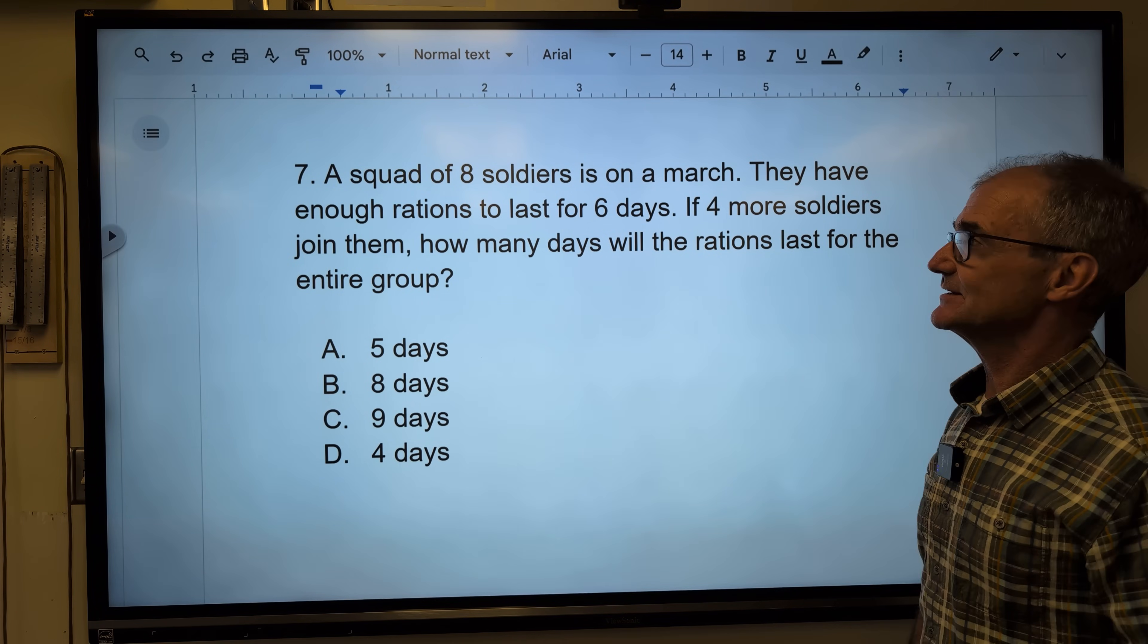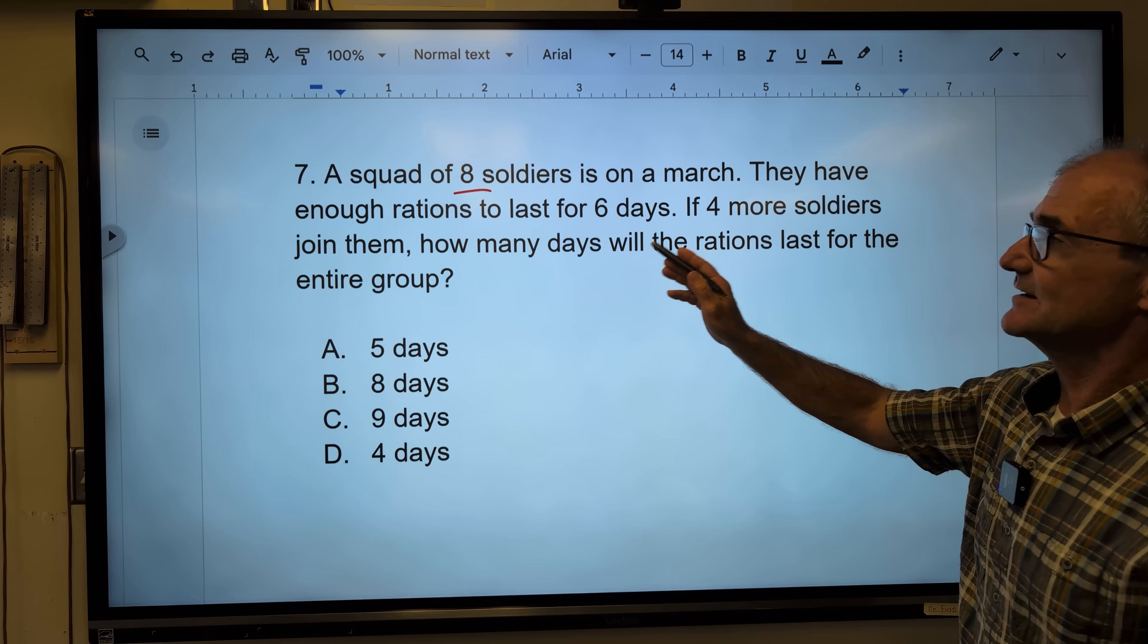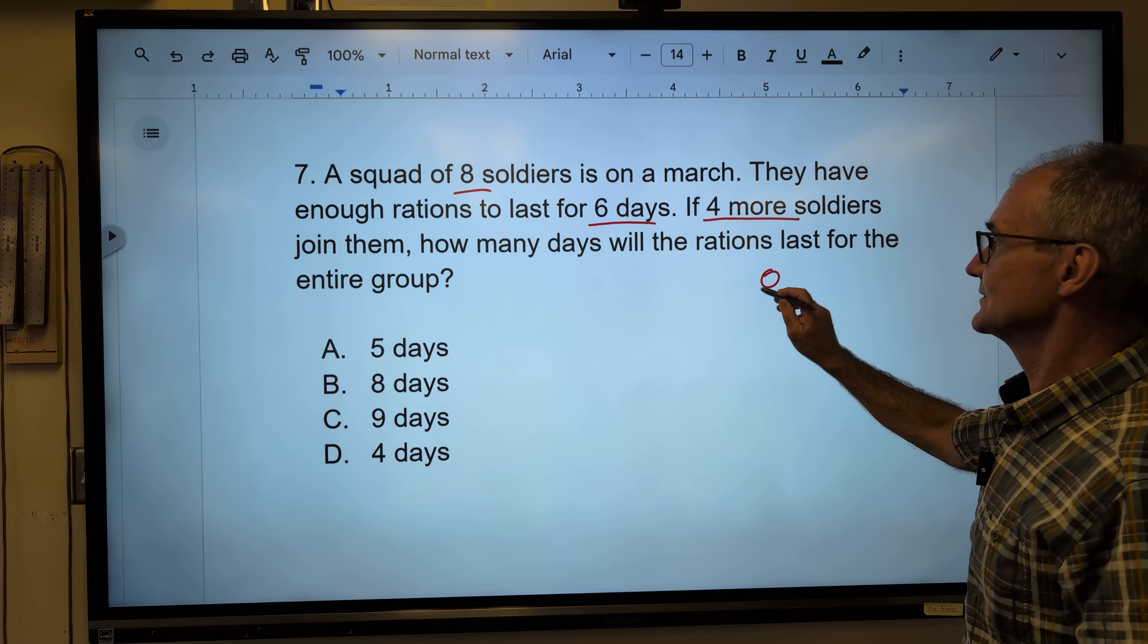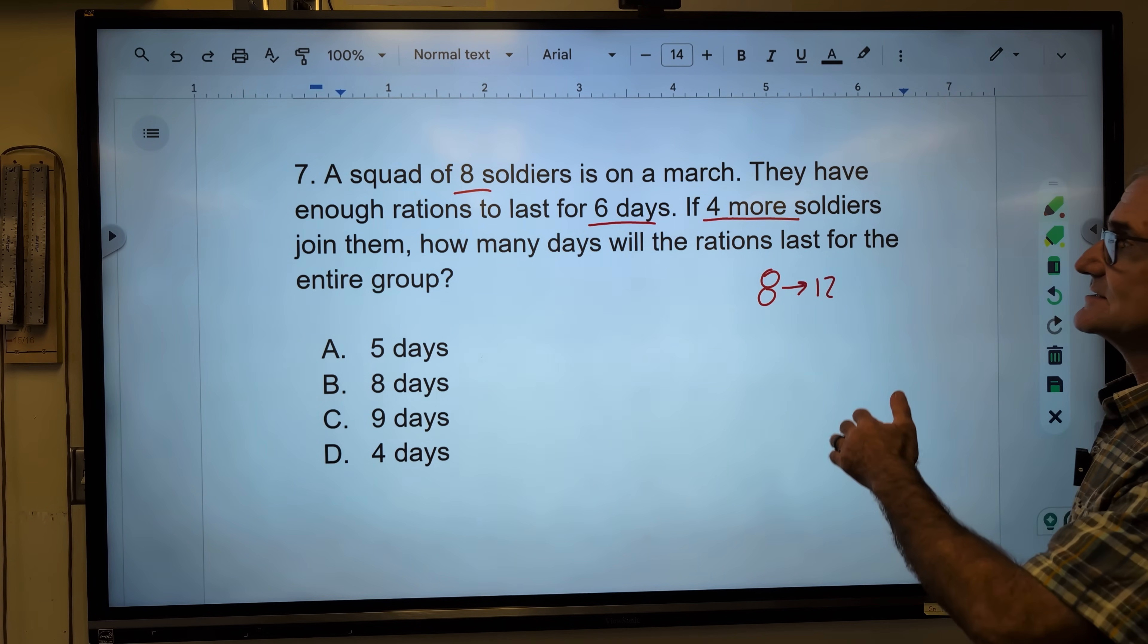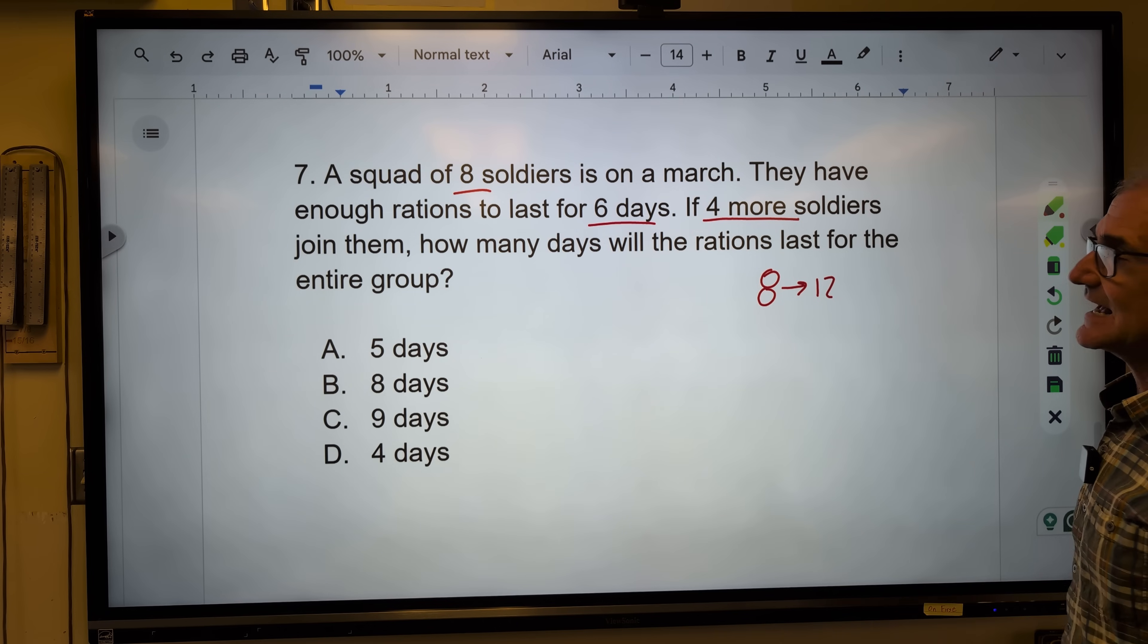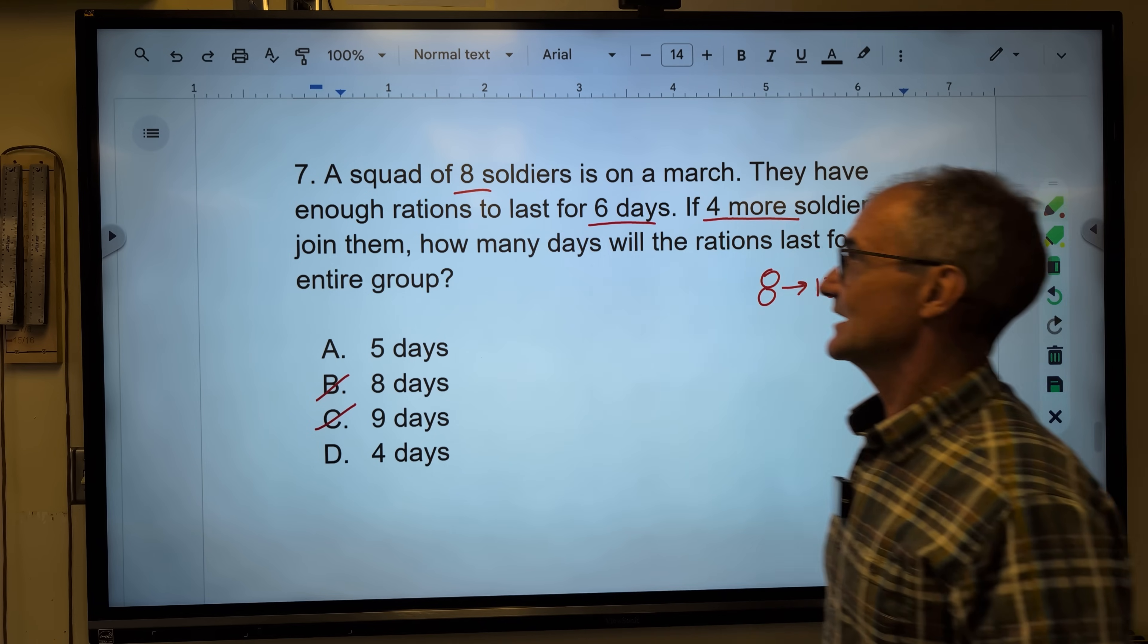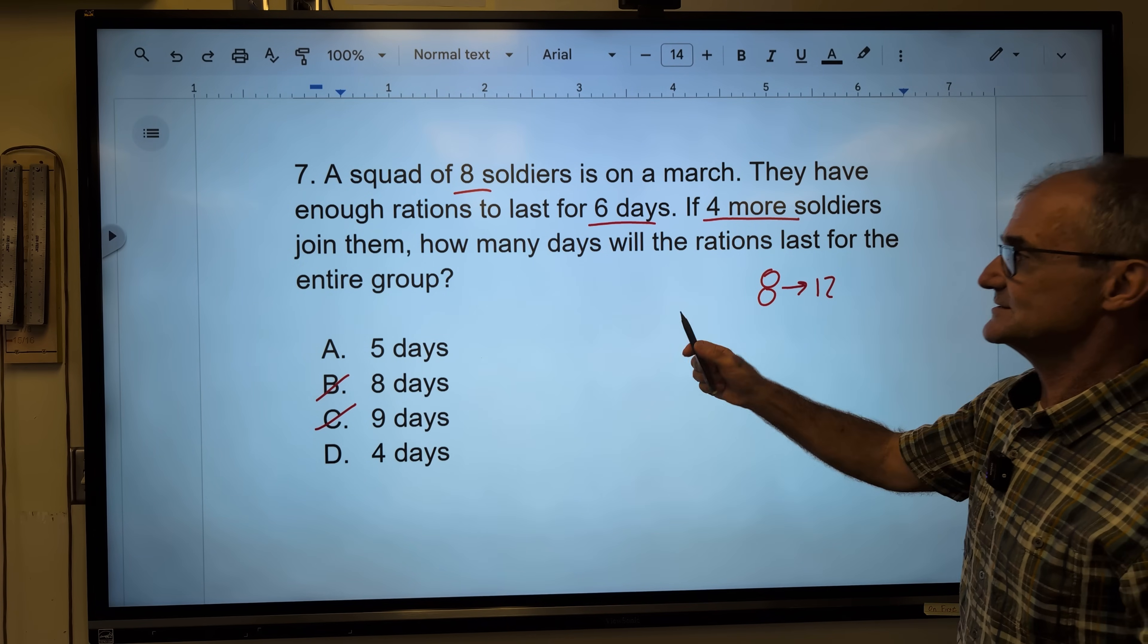Problem number seven, a squad of eight soldiers is on a march. They have enough rations to last six days. Four more people are added. So I'm going from eight people to 12 people. Eight plus four gives me the 12. I go more. So I know with 12 more people eating the rations, the number of days have to go down. It's going to last less time. So I could cross out the eight and the nine.